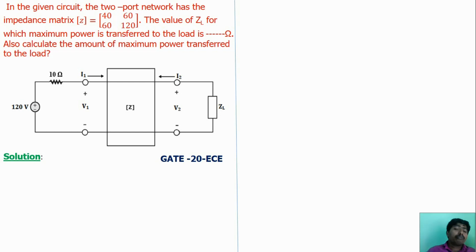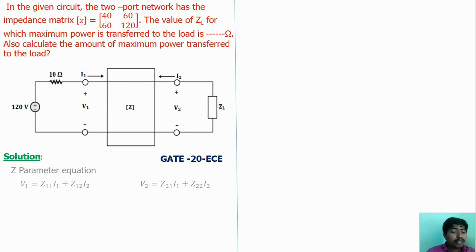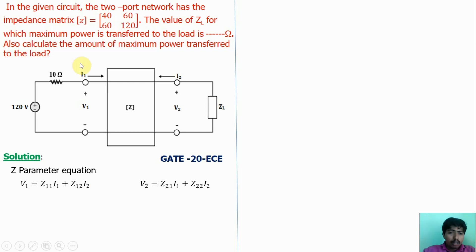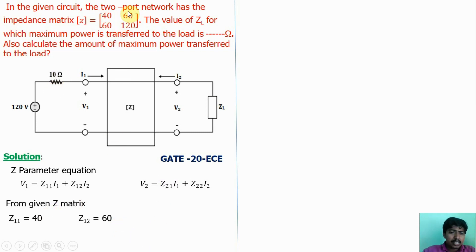If we know the Thevenin circuit for the two-port network, we can easily find these values. So the first objective is to find the Thevenin circuit. The Z-parameter matrix is given: Z11 = 40, Z12 = 60, Z21 = 60, Z22 = 120.